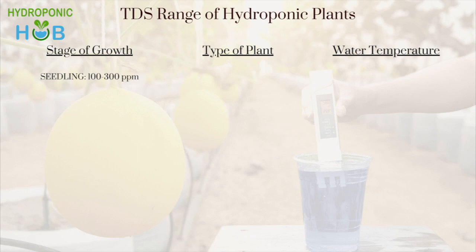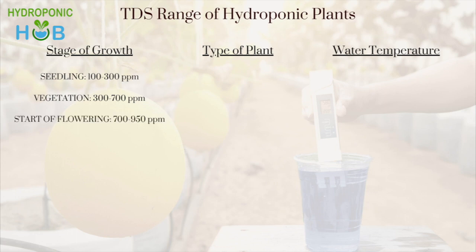According to the stage of growth: a seedling requires 100 to 300 ppm — normally filtered water has such a level, so it requires very few nutrients. During the vegetation cycle, the plant requires 300 to 700 ppm, and at this stage the plant requires more nitrogen nutrients than others.